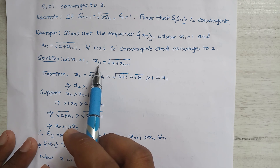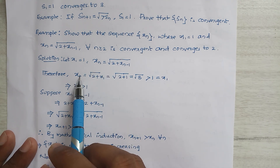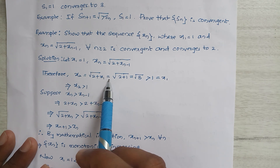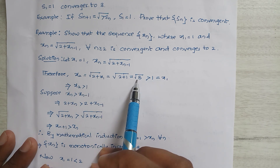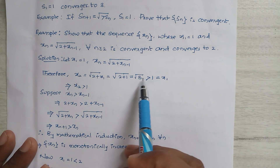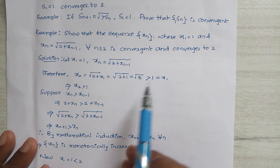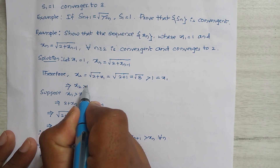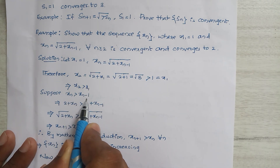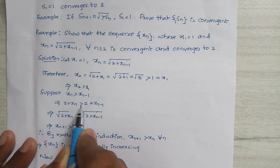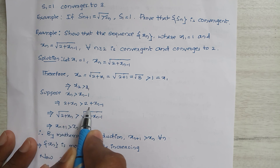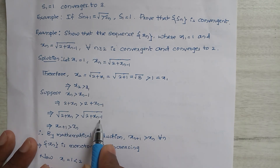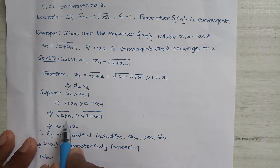Putting n = 2, the equation becomes x2 = √(2 + x1) = √(2 + 1) = √3, which is greater than 1 = x1. So x2 > x1. Now suppose xn > xn-1. Adding 2 to both sides: 2 + xn > 2 + xn-1, which implies √(2 + xn) > √(2 + xn-1), that is, xn+1 > xn.